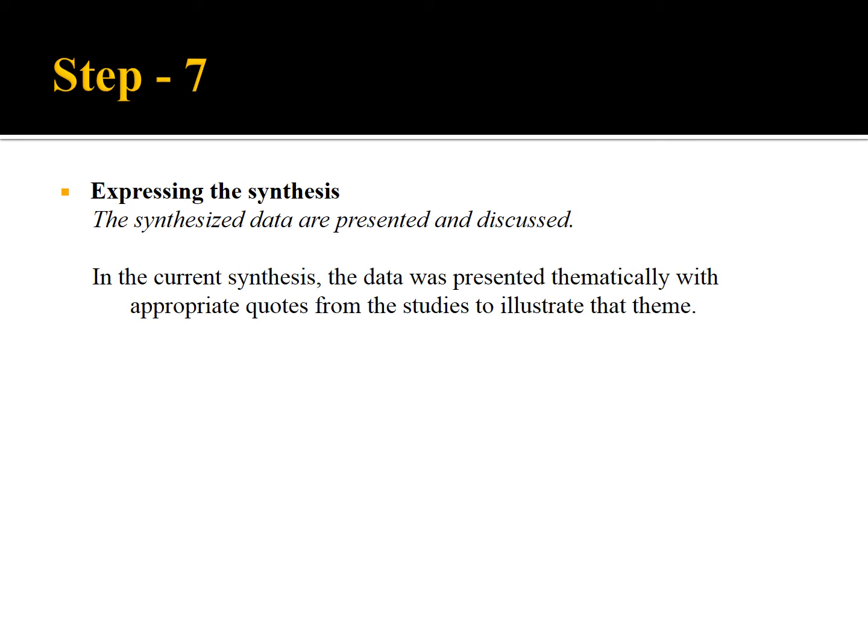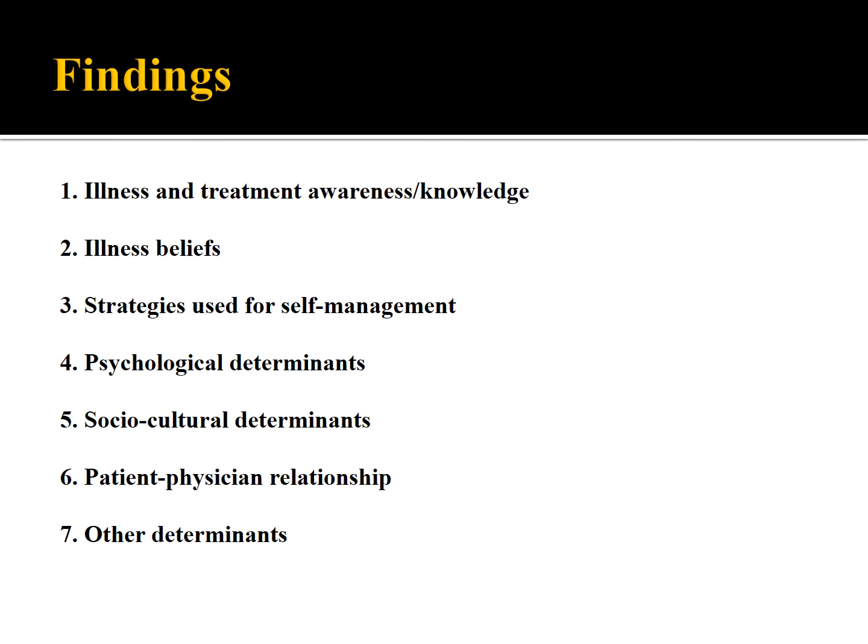Now let's move on to the final step: expressing the synthesis. In this step, the synthesized data was presented and discussed in a particular format. In the current study, we have chosen the thematic format and each theme was discussed with supportive relevant quotes. These are the seven key findings of this current research: first, illness knowledge and treatment awareness; second, illness belief; third, strategies used by the patients in order to adhere to a set of regimens; fourth, psychological determinants; fifth, sociocultural determinants; sixth, patient-physician relationship; and seventh, other determinants.